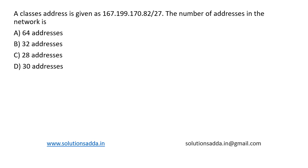This is a question from computer networks. A classless address is given by 167.199.170.82 slash 27. The number of addresses in the network is, and four options are given. So the IP address is defined as 167.199.170.82 slash 27.